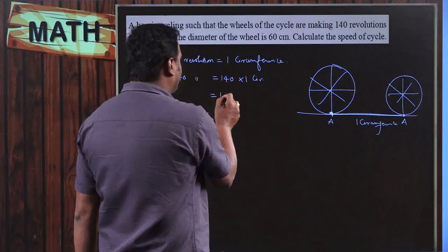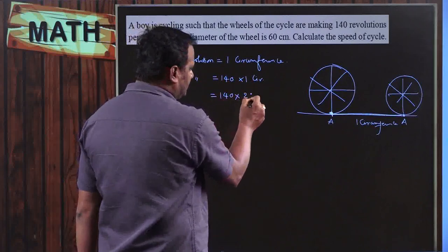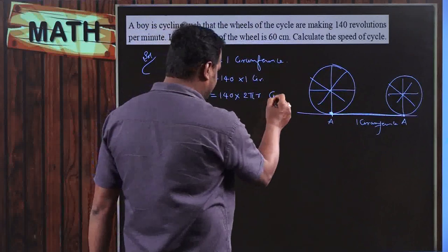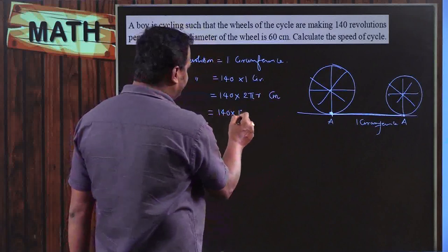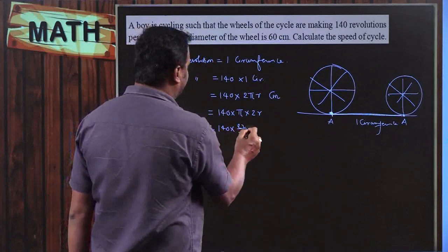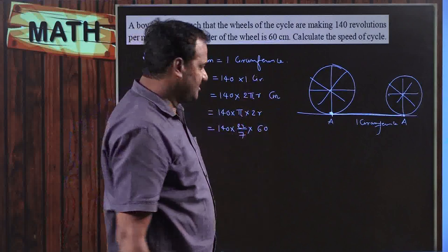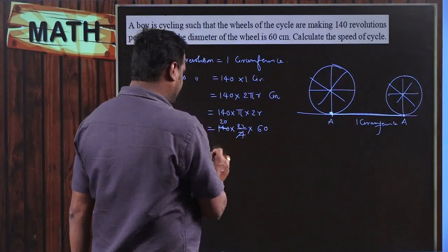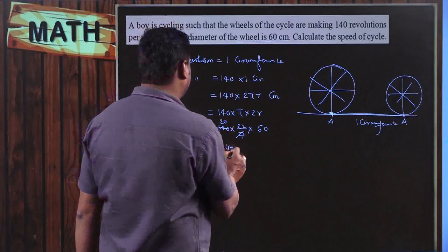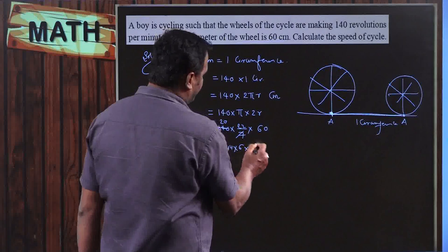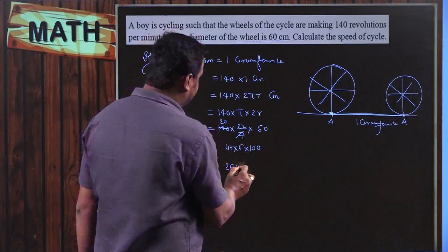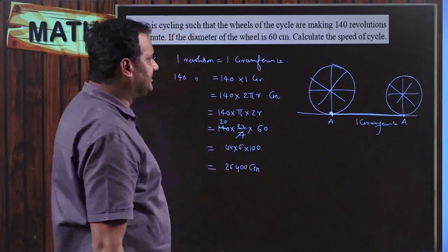The diameter of the wheel is 60 cm, so circumference = π × 60. With π = 22/7: total distance = 140 × 22/7 × 60 = 20 × 22 × 60 = 44 × 600 = 26,400 cm per minute.